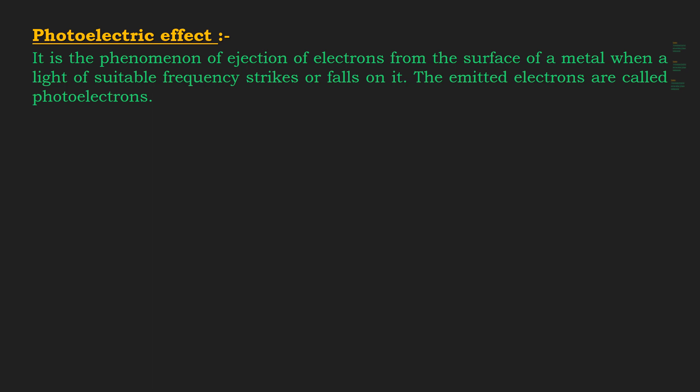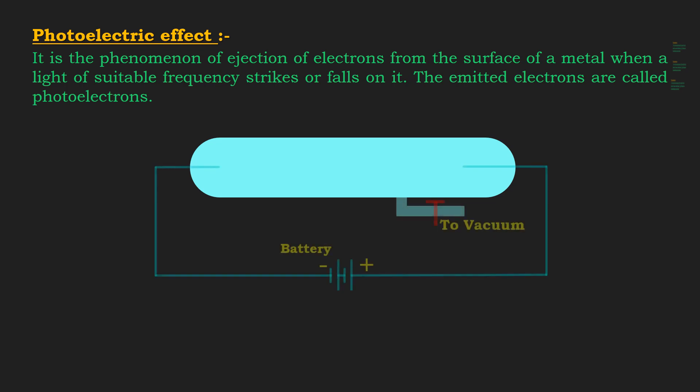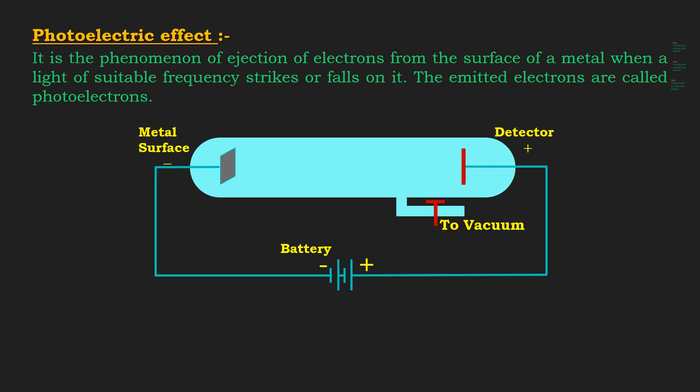The apparatus consists of an evacuated chamber which contains two electrodes connected to an external circuit. The metal that exhibits the photoelectric effect is made the negative electrode. When light of sufficiently high energy strikes the metal, the electrons are ejected from its surface and move towards the positive electrode. Only a few metals such as cesium, rubidium, or potassium, in which electrons are loosely held by the nucleus, show this effect when visible light falls on them.